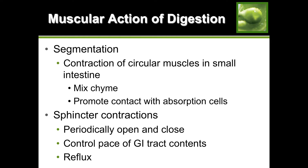Segmentation is another muscular action of digestion - food starts to break down into smaller pieces as it passes through the digestive tract. This is due to contraction of circular muscles in the small intestine, and at the same time this contraction helps mix the chyme and promotes contact with absorption cells. Most nutrient absorption happens in the small intestine, so this contraction promotes the contact of chyme to the absorption cells.